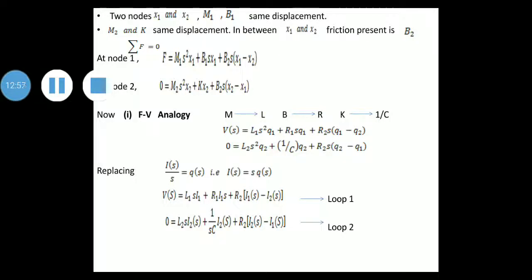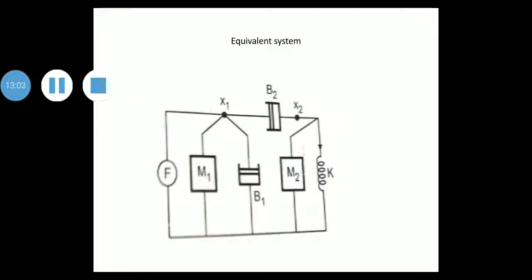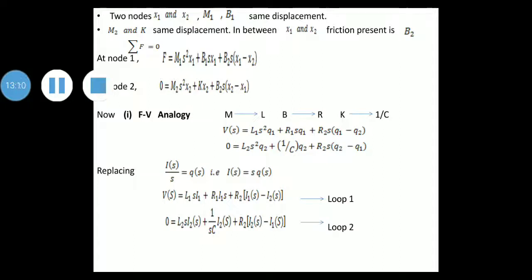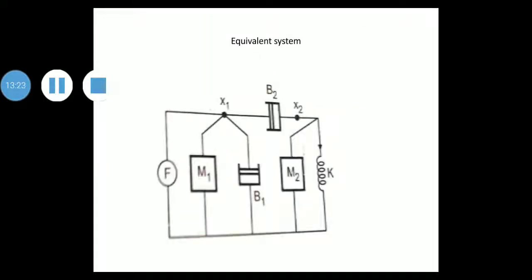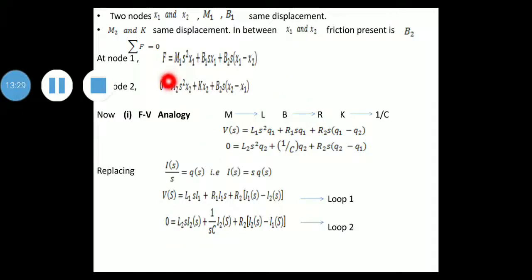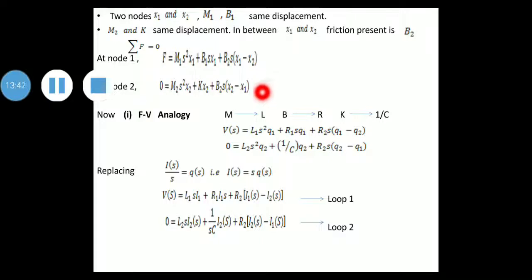We write the summation of forces equal to zero. At node 1: F = M1 S²X1 + B1 S X1 + B2 S(X1 − X2), because B2 is between X1 and X2. At node 2: there is no force acting, so 0 = M2 S²X2 + K X2 + B2 S(X2 − X1). We write X2 − X1 at node 2 because we are starting with node 2.